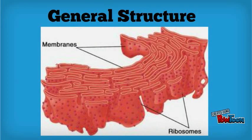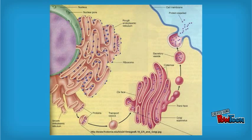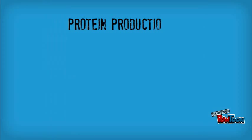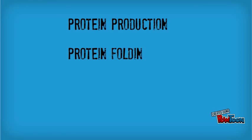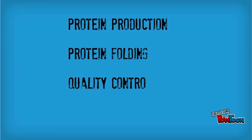The general structure of the endoplasmic reticulum is an extensive membrane network of cisternae, sac-like structures, held together by the cytoskeleton. The rough endoplasmic reticulum is involved in some protein production, protein folding, quality control, and dispatch.